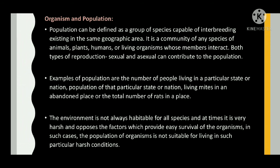Population can be defined as a group of species capable of inter-breeding existing in the same geographic area. It is a community of any species of animals, plants, humans or living organisms whose members interact. Both types of reproduction, sexual and asexual, can contribute to the population. Examples of population are the number of people living in a particular state or nation, or the total number of rats in a place.